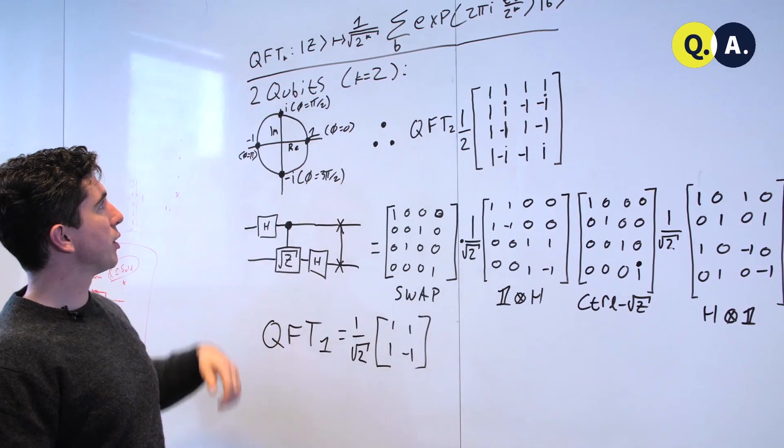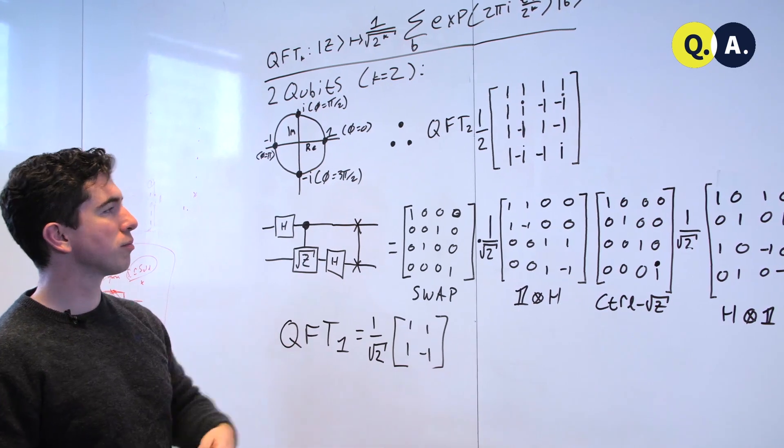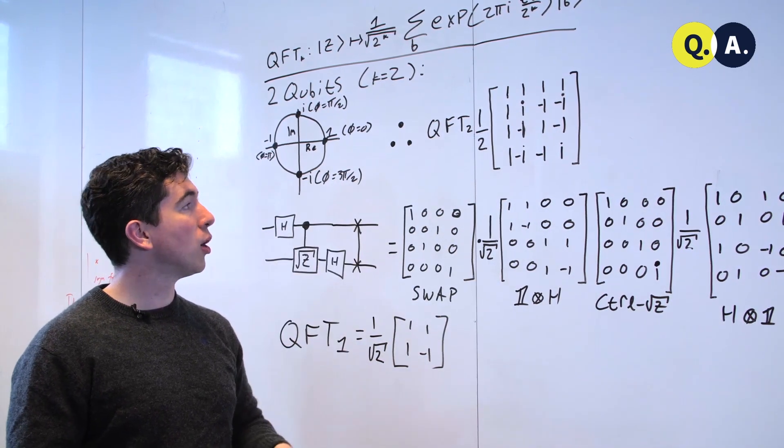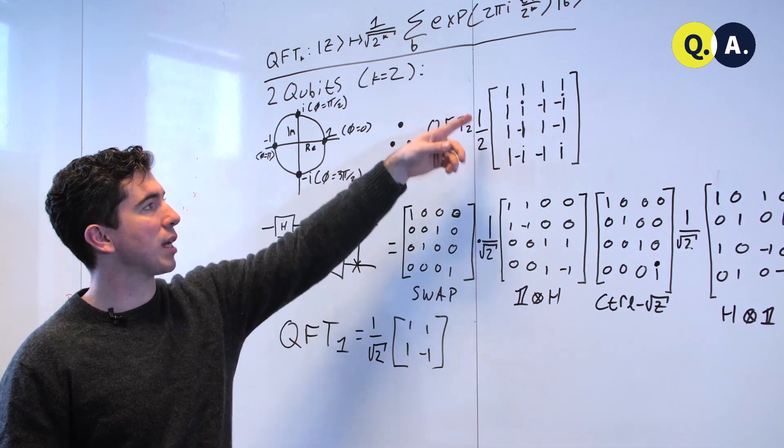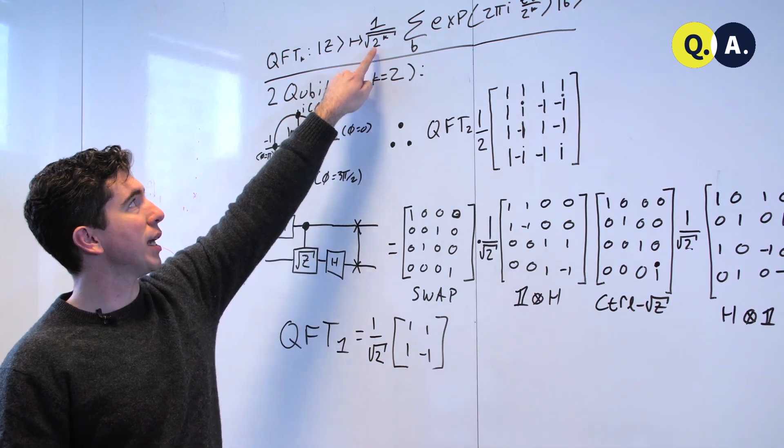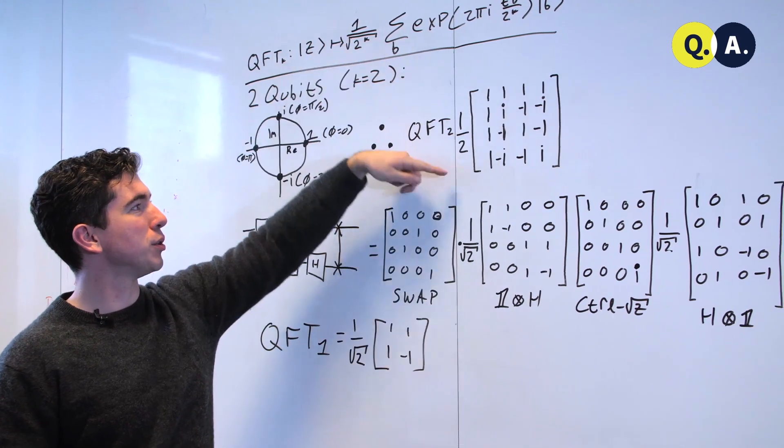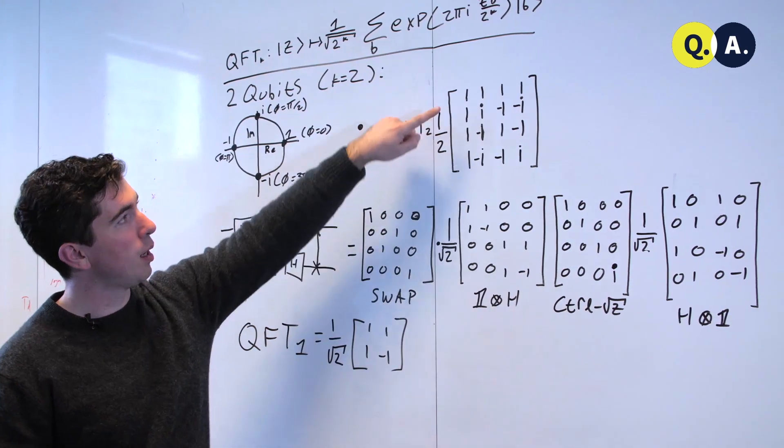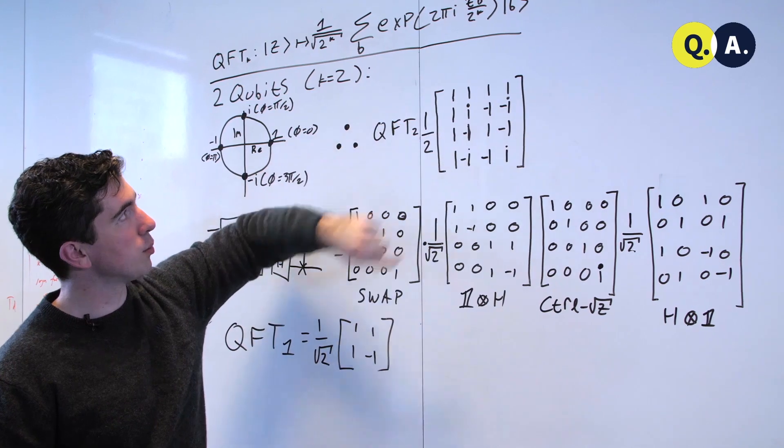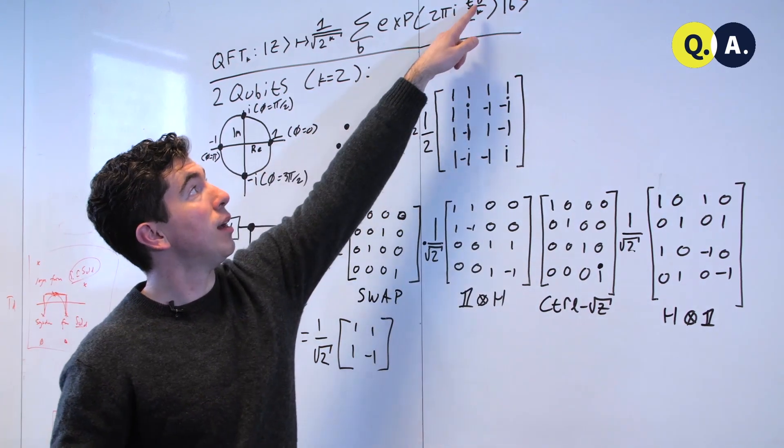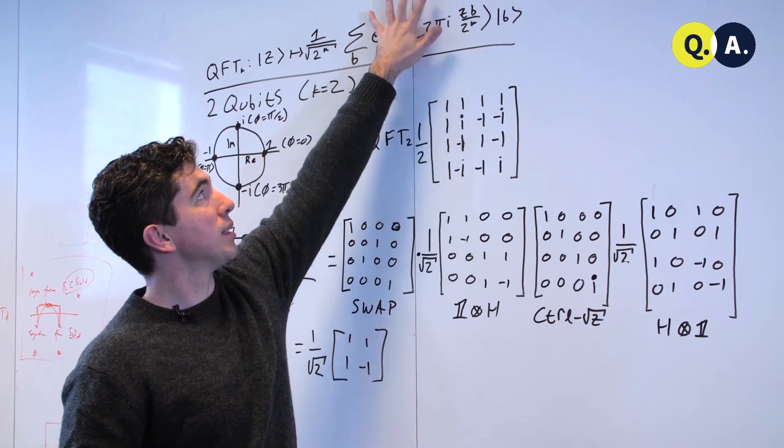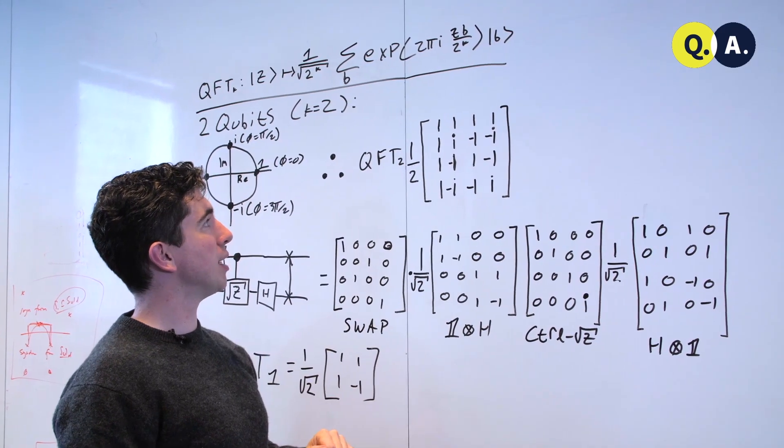But it gets easier if we look at an example on two qubits. The matrix for the quantum Fourier transform on two qubits has a coefficient of one-half, which is 1 over 2 to the k, with k equals 2, square rooted, which cancels to give 2. We have the first column 1, 1, 1, 1, which is what happens if I multiply every integer b by 0 and then take e to the 2πi times 0.